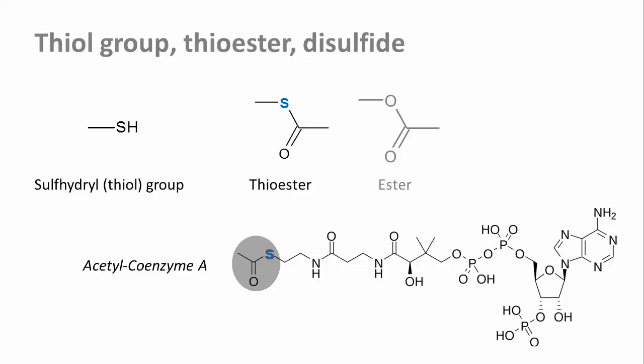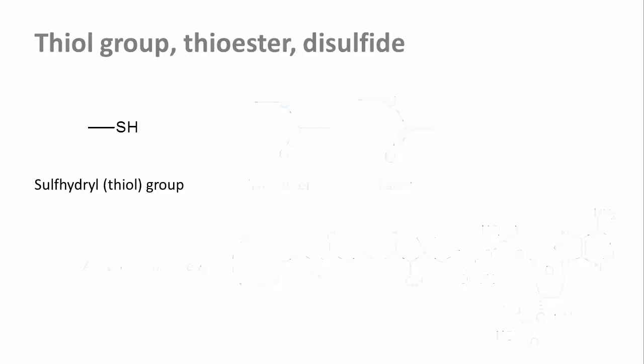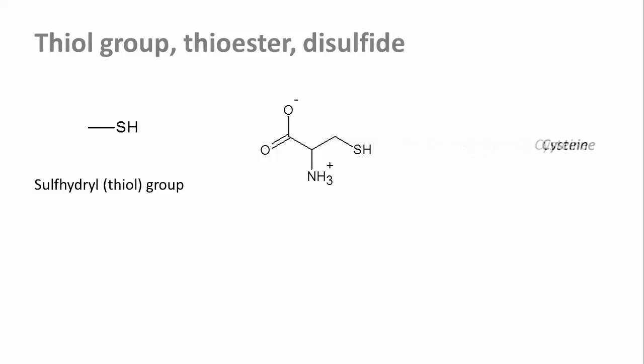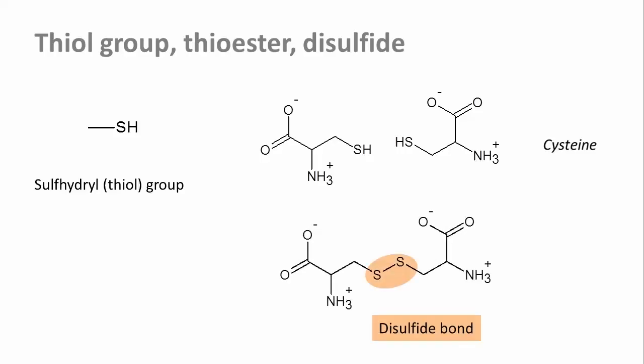While we're at the sulfhydryl group, let's look at some of the unique chemistry it can do — we'll have a closer look when we come to amino acids and proteins. Cysteine is the only amino acid with a sulfhydryl group. Two of these sulfhydryl groups can be linked to form a disulfide bond, a very important feature of many protein structures.